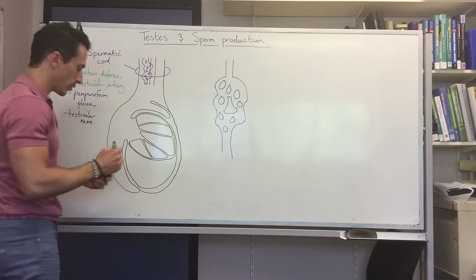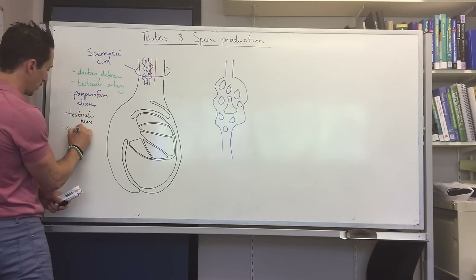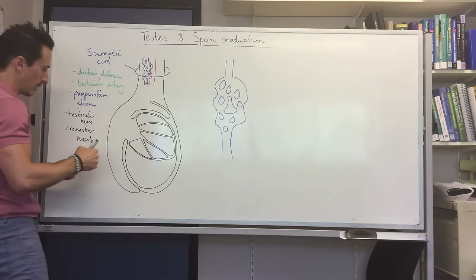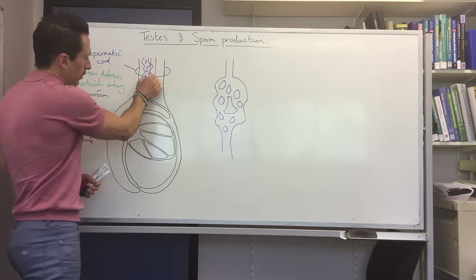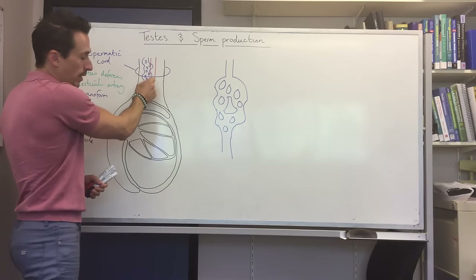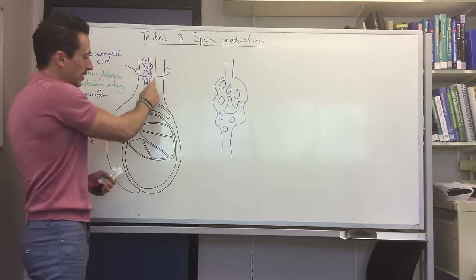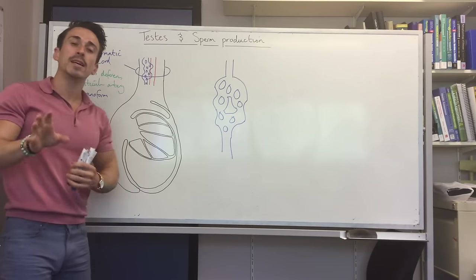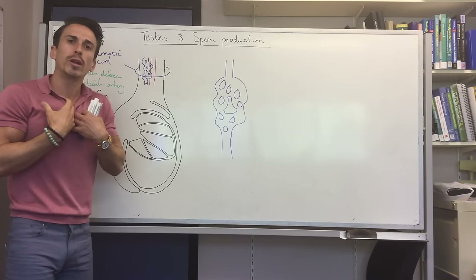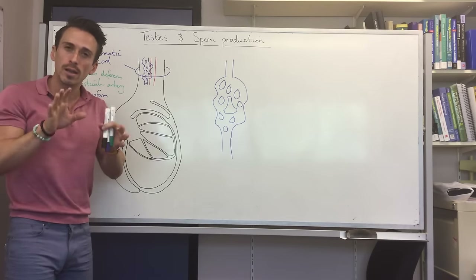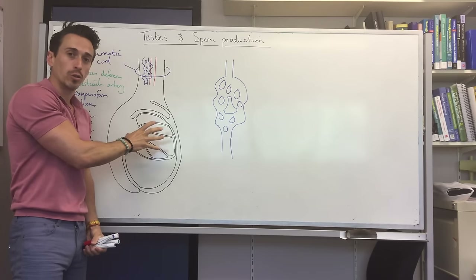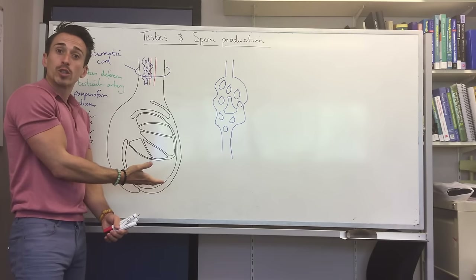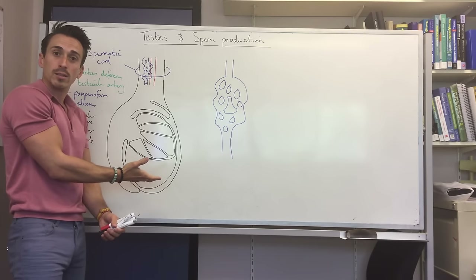Also within the spermatic cord is the testicular nerve and the cremaster muscle. The cremaster muscle comes down through the spermatic cord — when relaxed, the testes drop; when it contracts, the testes lift up. This relates to temperature regulation: when the body is hot, the cremaster relaxes so the testes drop to cool down.